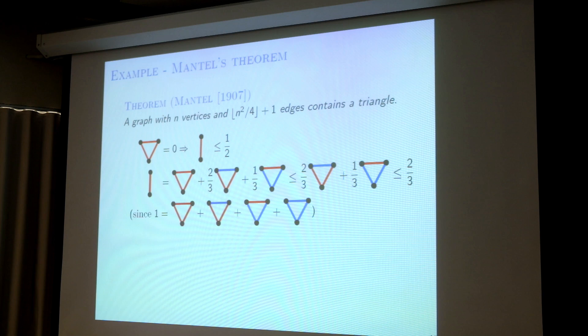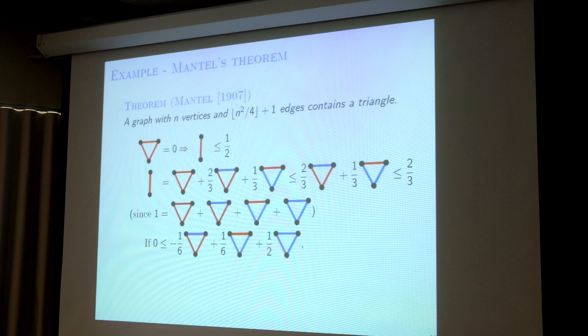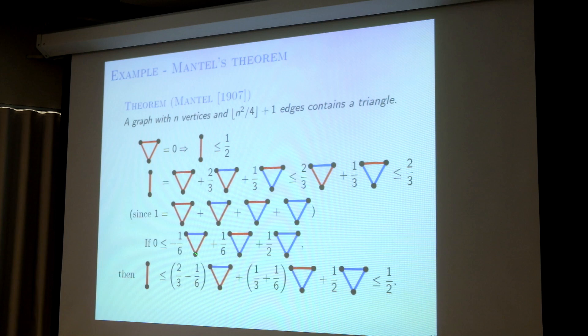Well, if I can show some inequality — say something is greater than or equal to zero — then I will just add it to this side. I say: zero plus red edge is the red edge. Then 2/3 minus 1/6 is 1/2. And then each term works out to one-half, and the summation is less than or equal to one-half. So if I can show this inequality, I'm done.